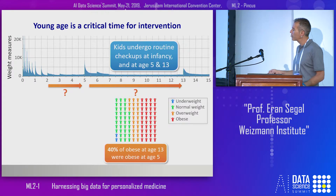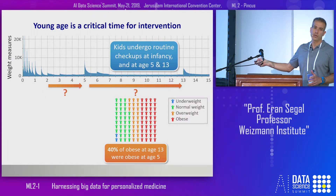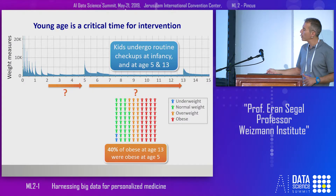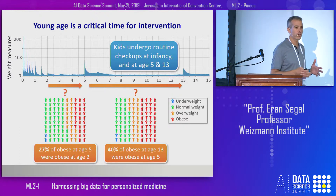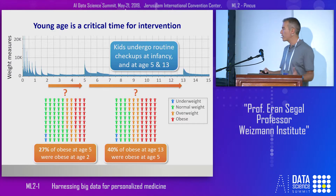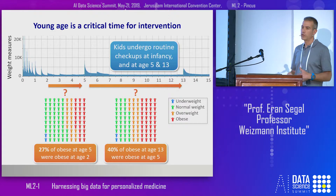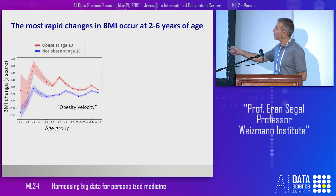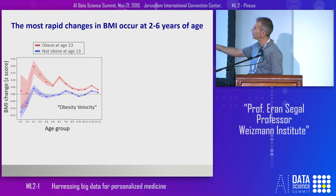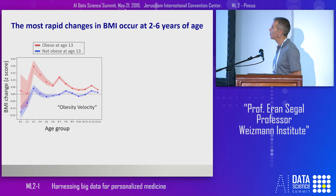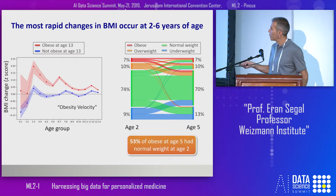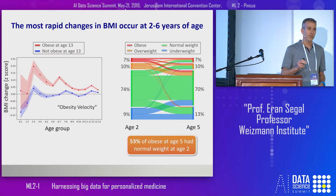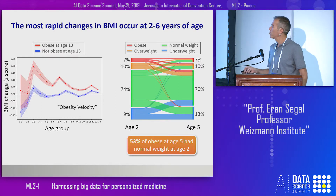When we examined this, we saw that about 40% of kids who were obese at age 13 were already obese at age 5, while only 27% of those obese at age 5 were obese at age 2. In other words, if you're obese at age 5, you're quite likely to remain that way at age 13, while at age 2 there's still much more chance of changing. Looking at kids who are obese at age 13, the most rapid changes in weight occur between the ages of 2 and 6. More than half of kids who are obese at age 5 were at normal weight at age 2. Given all that, we decided to focus on predicting obesity at age 5 from all data accumulated up to age 2.